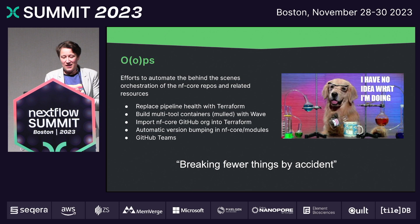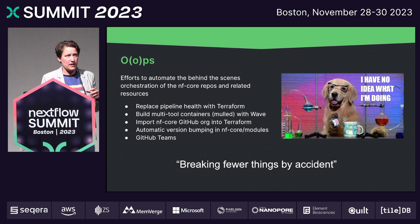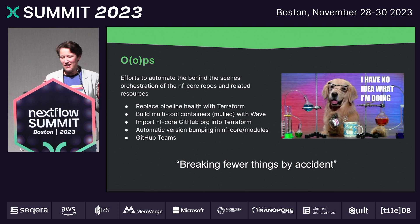The ops team — they told me to spell it this way — is a team whose efforts aim to automate a lot of the things that need to happen across NF-Core's infrastructure. NF-Core has multiple resources: Slack, GitHub, websites built from GitHub, and a number of other infrastructure components. The goal is to get these things to talk to each other and have as much as possible automated, with the overall goal of breaking fewer things by accident. I'm a little fuzzy on exactly what they did during the hackathon, but my understanding is they didn't break anything, so well done there.